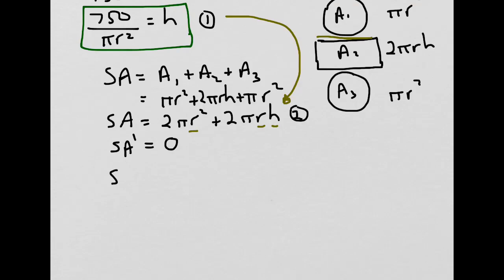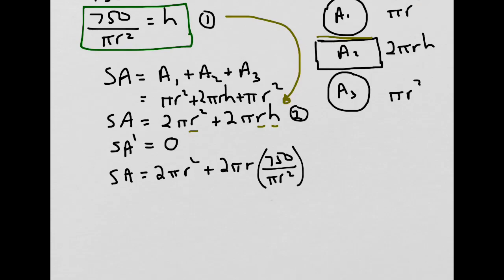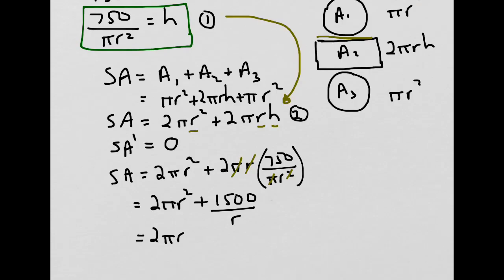Substituting h equals 750 over pi r squared into the surface area formula, we get SA equals 2 pi r squared plus 2 pi r times 750 over pi r squared. Working this out, we can cancel the pi's and one of the r's, ending up with 2 pi r squared plus 1500 over r. Using laws of exponents, we can also write this as 2 pi r squared plus 1500 r to the minus 1.